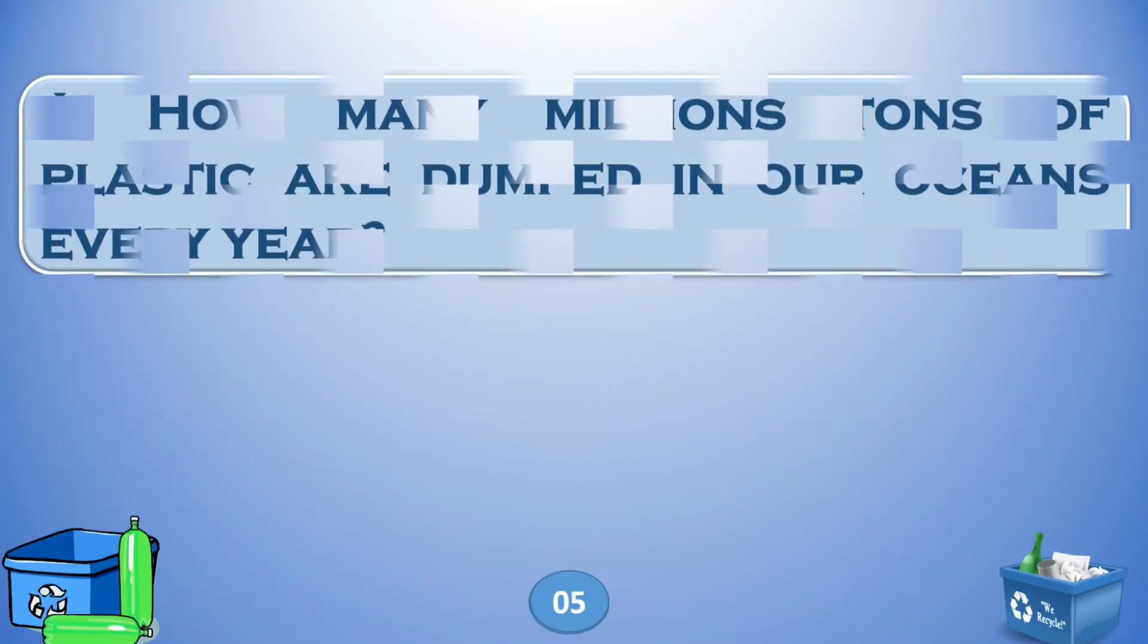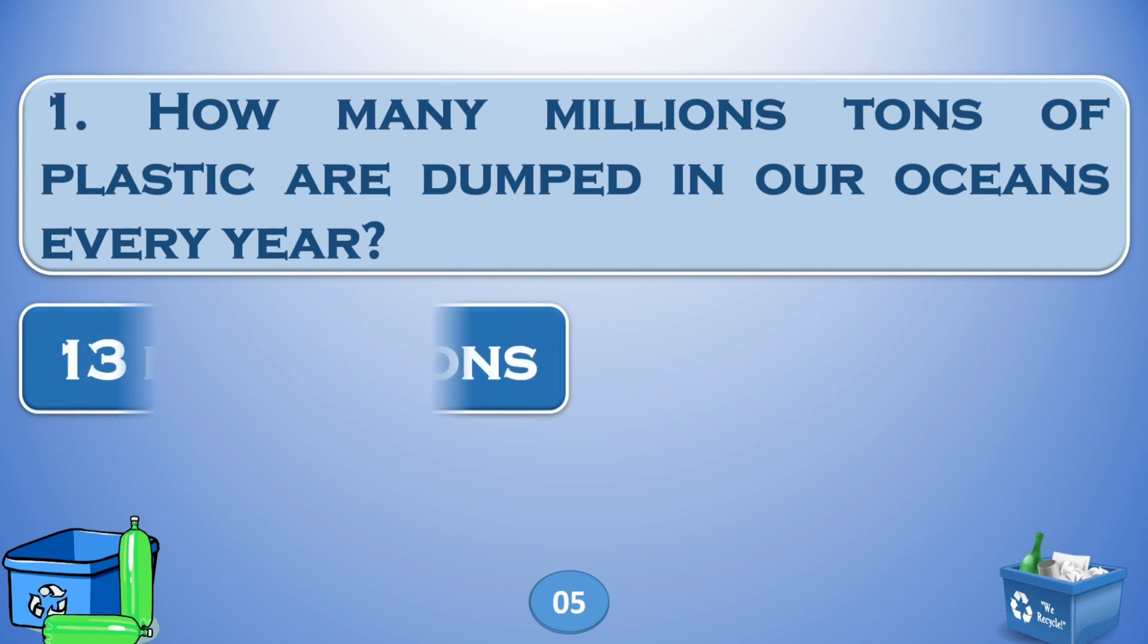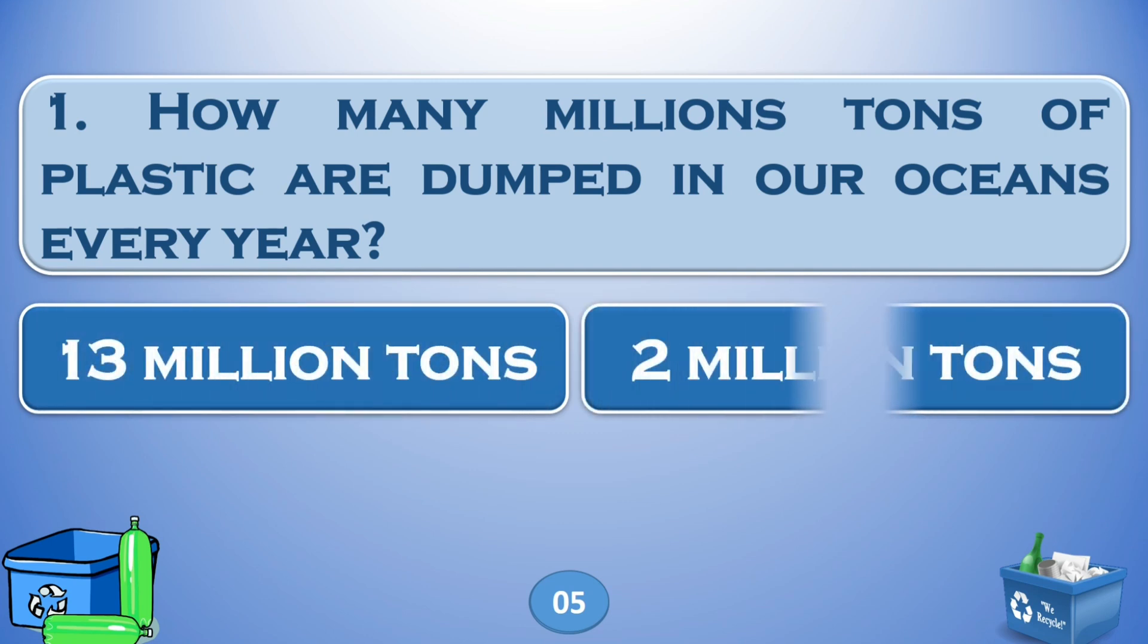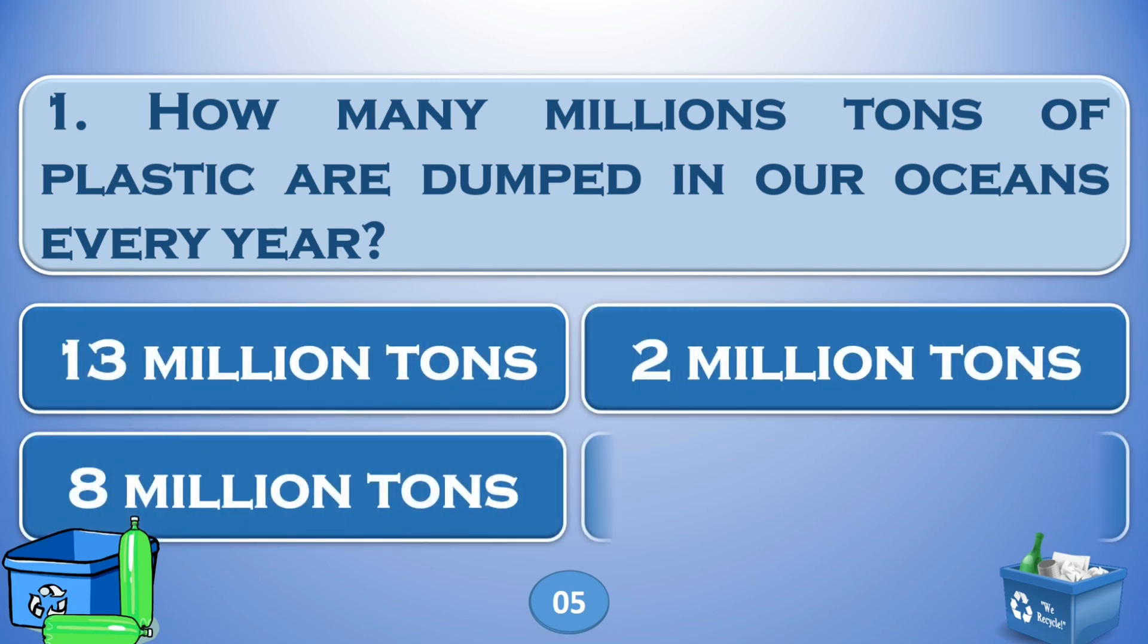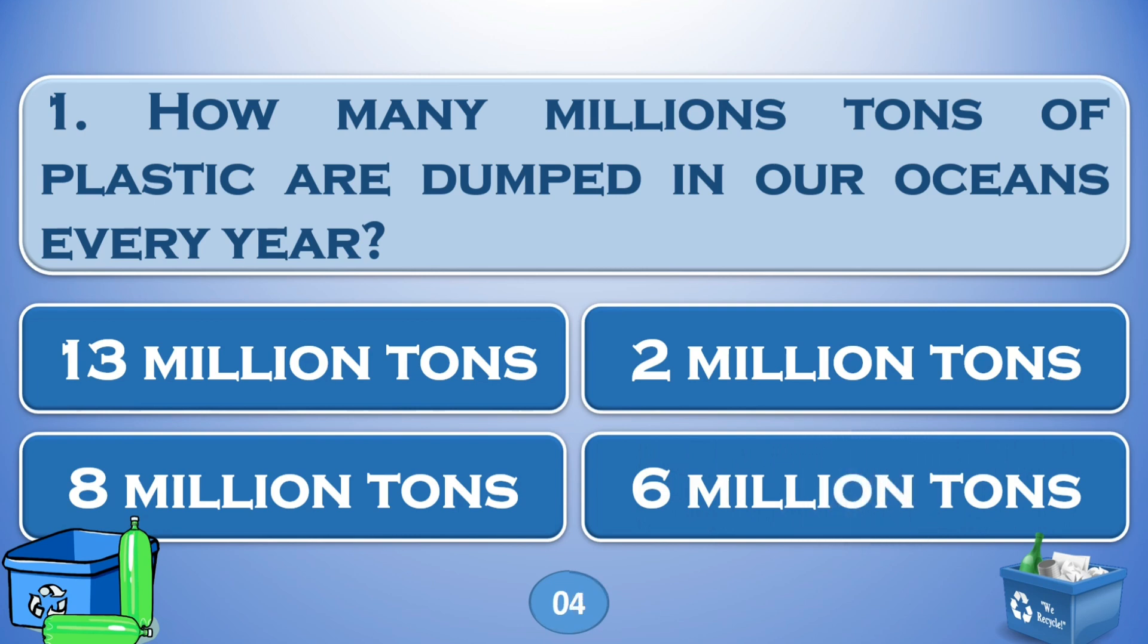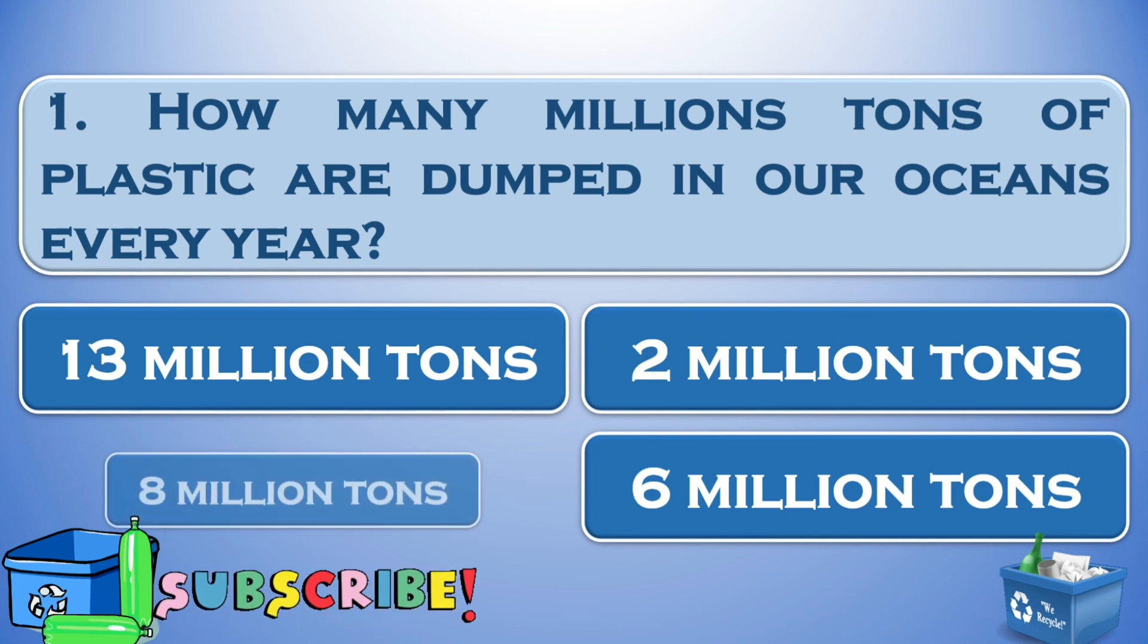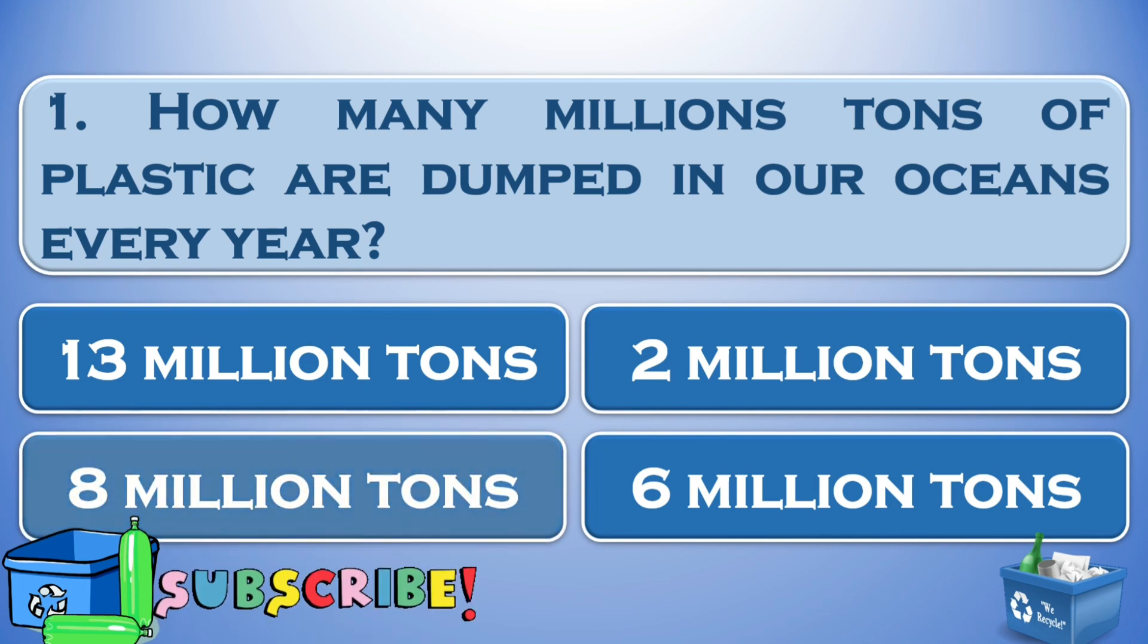How many million tons of plastic are dumped in our oceans every year? Options are: A) 13 million tons, B) 2 million tons, C) 8 million tons, or D) 6 million tons. The answer is 8 million tons.